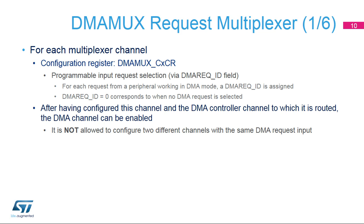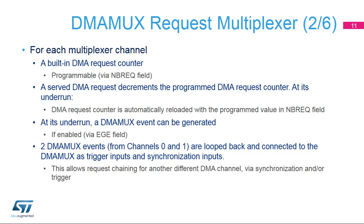After having configured the channel and the DMA controller channel to which it is routed, the DMA channel can be enabled. It is not allowed to configure two different channels with the same DMA request input. For each multiplexer channel, a built-in DMA request counter is programmable via the NBREQ field. A served DMA request decrements the programmed DMA request counter. At its underrun, the counter is automatically reloaded. A DMA MUX event can be generated if enabled via the EGE field. Two DMA MUX events from channels 0 and 1 are looped back as trigger and synchronization inputs, allowing request chaining for another DMA channel.